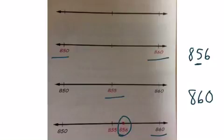Rounding numbers is something we often do in math to make numbers easier to work with, so we want to be comfortable with it. That's one strategy for rounding using a number line, and it should sound somewhat familiar from third grade.